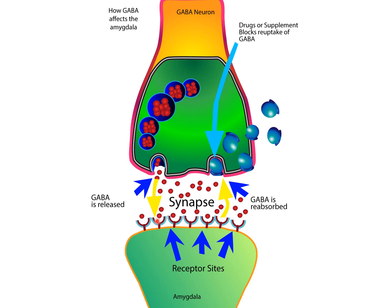When GABA binds to these GABA receptors, it opens an ion channel that these receptors are part of. This ion channel opens up and lets chloride in. When chloride is let in, it actually inhibits neurotransmission post-synaptically. So when GABA binds and the chloride ion channel opens, it inhibits neurotransmission and therefore reduces the hyperactivity of the amygdala.